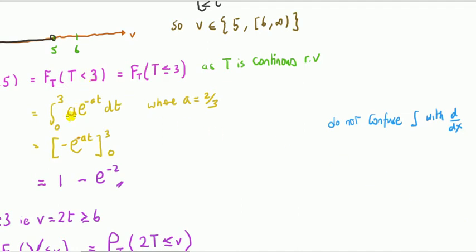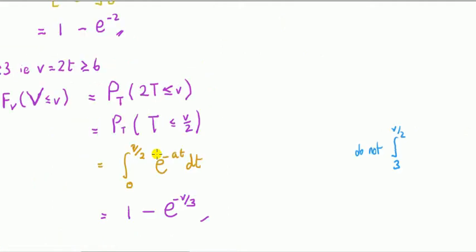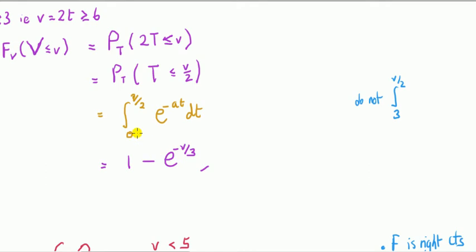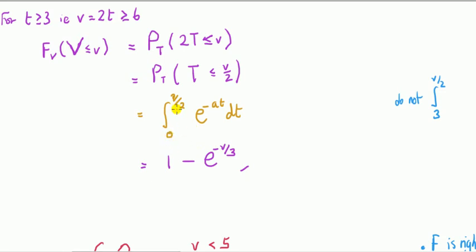When doing the integral — e to the minus whatever — don't confuse integration with differentiation. It's very easy to accidentally perform a derivative when you should be integrating. Another common mistake: be careful that we are not integrating from 3 to v/2, but from 0 to v/2 on the full support. Some people use 3 to v/2 because they see T ≥ 3 in the case condition, but the expression P(T ≤ v/2) means T falls from 0 up to v/2 — it's the CDF of T evaluated at v/2.